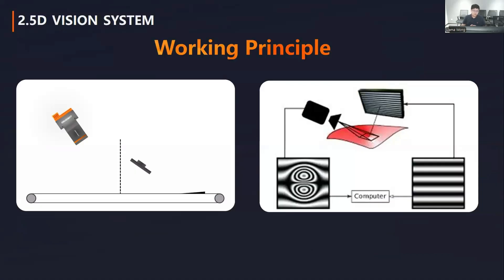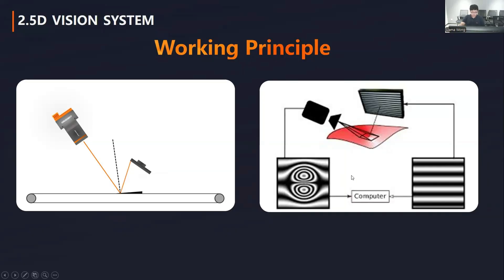Now I will talk about the working principle, starting with two images to give a basic concept of this technology. Imagine a line-scan camera and a light source. When there is a surface feature, the vector of the surface will change and we will see another position on the light. On the right image, when we project a stripe light on the surface, if there is no defect it appears normal. But if there is a small bump, the stripe will deform accordingly.